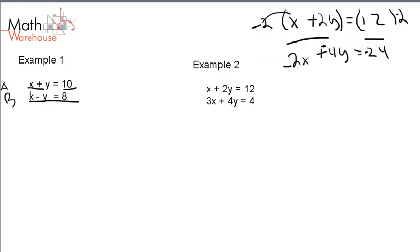Let's see what happens when we add equation a to equation b. We get 10 plus 8, which is 18. Here something awesome happens: we get plus y minus y, or zero, and we get 2x, so 2x equals 18.